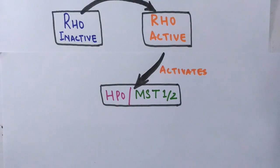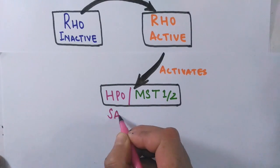On the left side with pink sketch we will be describing the Drosophila components, and on the right side with green sketch we will be describing the mammalian components of the pathway.